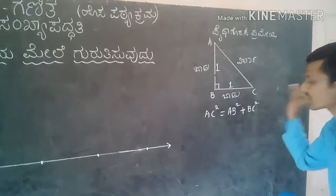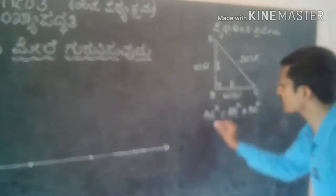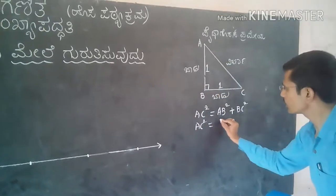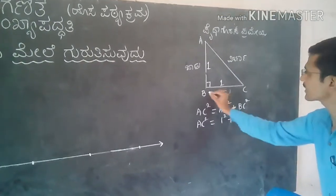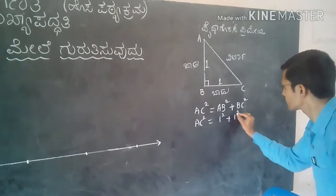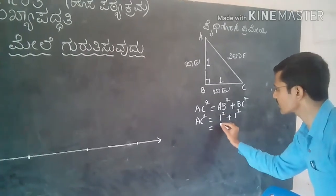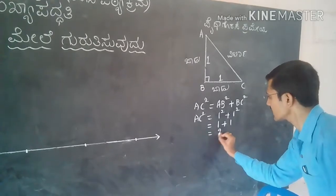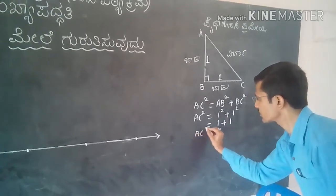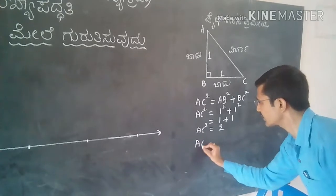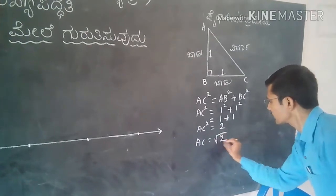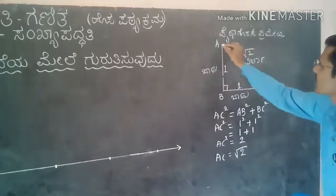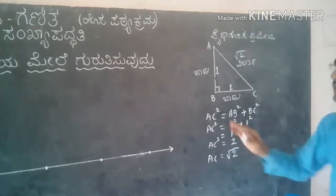The second dimension: one square plus one square with one square — that is the same square. One plus one is two, so AC squared is equal to two, and AC is equal to root 2. Yes, it is root 2.